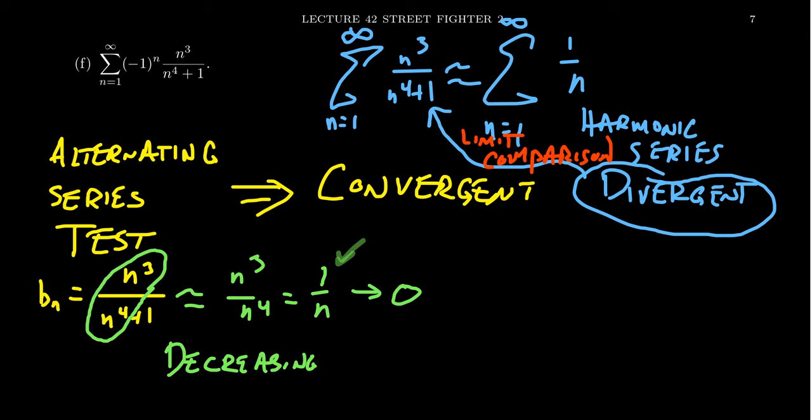So this now has shown us that our series is convergent, but it's not absolutely convergent. And so thus, we must resolve this with the final answer, that our series is conditionally convergent.